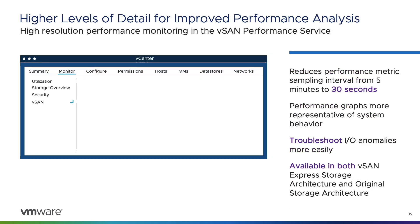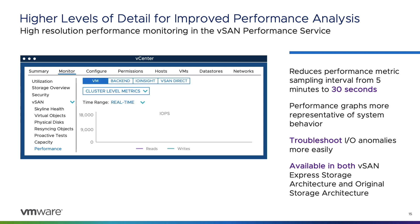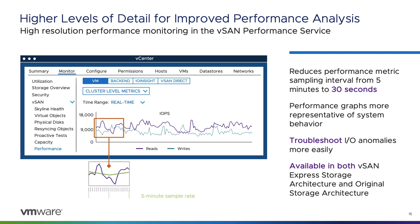Time-based performance metrics are an important tool to determine if an environment is delivering the expected performance levels. The vSAN performance service has played an important role for vSAN administrators, and has been enhanced to deliver metrics more representative of system behavior. Available in both the express storage architecture and the original storage architecture, the vSAN 8 Update 1 performance service now includes real-time monitoring that collects and renders performance metrics at just a 30-second sampling interval, a significant improvement over the previous five-minute sampling rate.